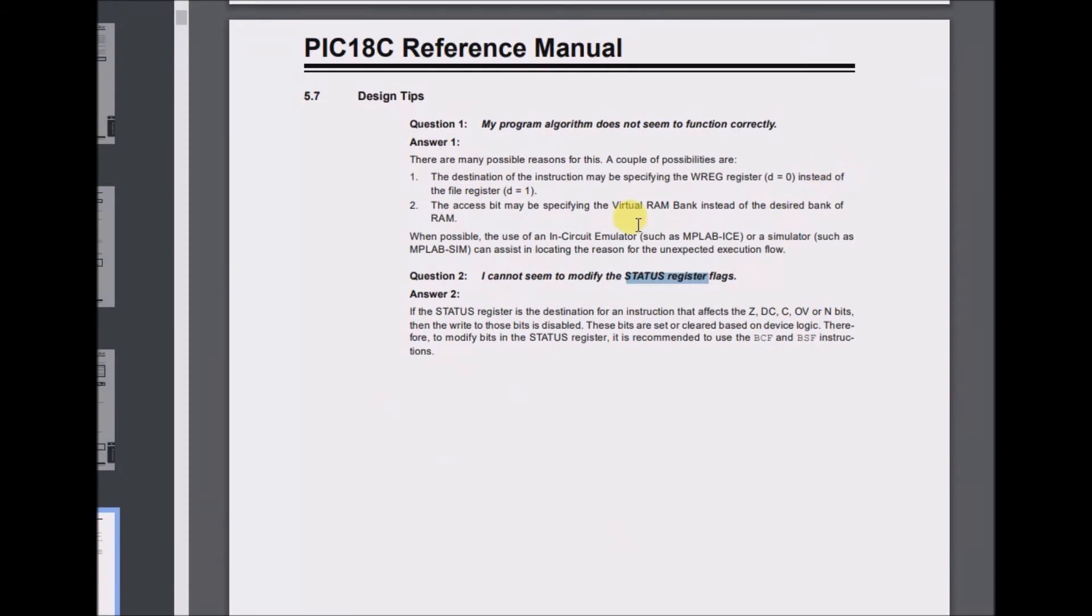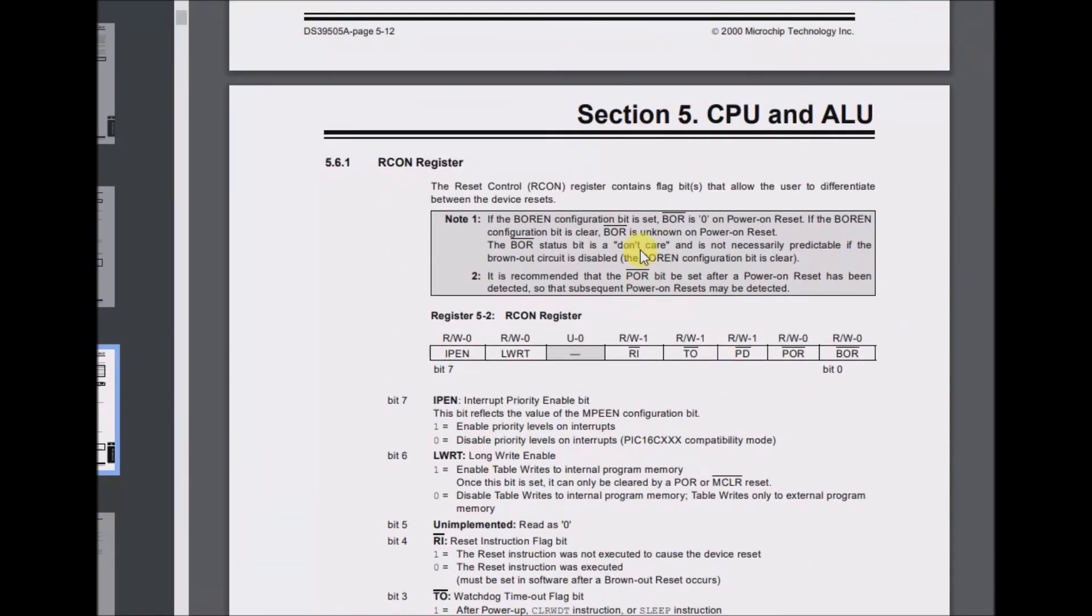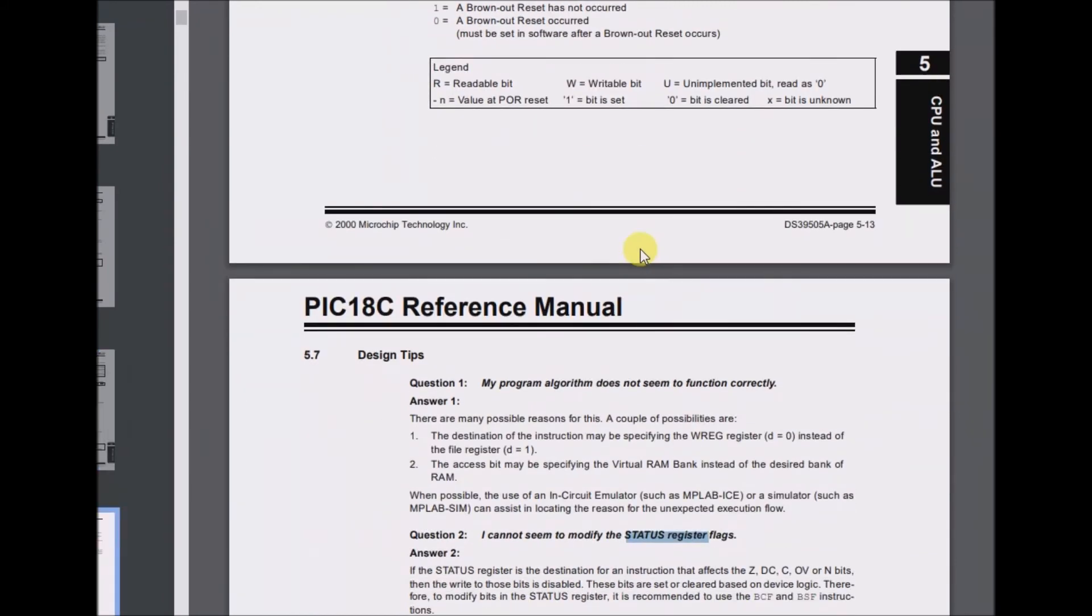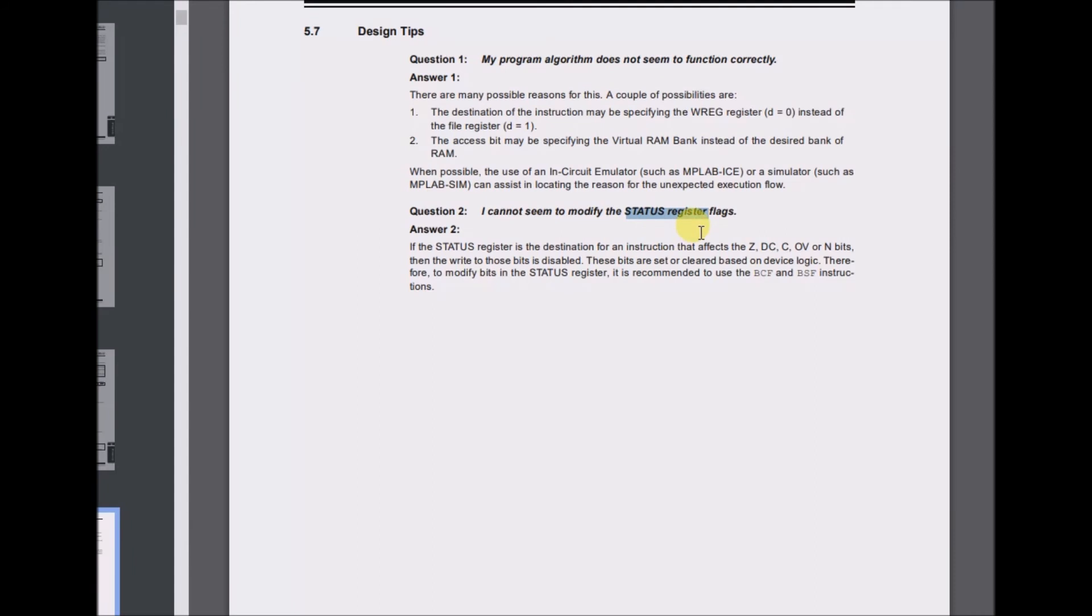This is on page 120. There's some design tips and the status register comes up. Question: I cannot seem to modify the status register flags. Answer: If the status register is the destination for an instruction that affects the Z, DC, C, OV, or N bits, then the write to those bits is disabled. These bits are set or cleared based on device logic. Therefore, to modify bits in the status register, it is recommended to use the BCF and BSF instructions.